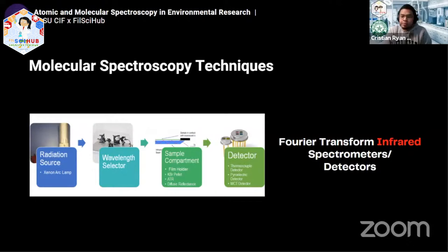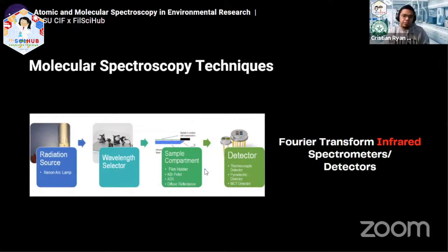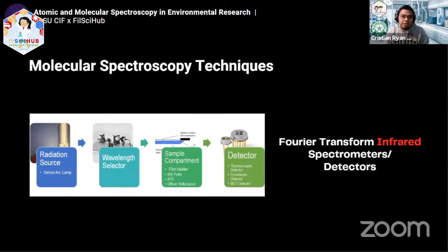The FTIR, or Fourier-transform infrared spectrometer, looks similar to what we saw earlier but this is what's inside. This has to be corrected — it's not a xenon arc lamp; it's usually a heat source, typically in ceramic form, because infrared light requires a heat source. We also have a wavelength selector — which we'll see in the next slide — it's not like a filter but more like a monochromator. There are various sample compartments depending on the sample, and there's a detector that is not a photodetector since we're dealing with infrared light, not UV or visible. The commonly used one now is the pyroelectric detector.